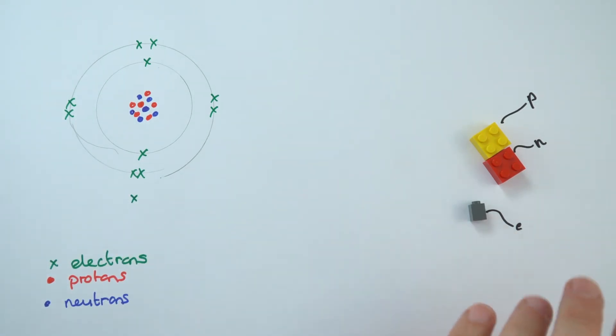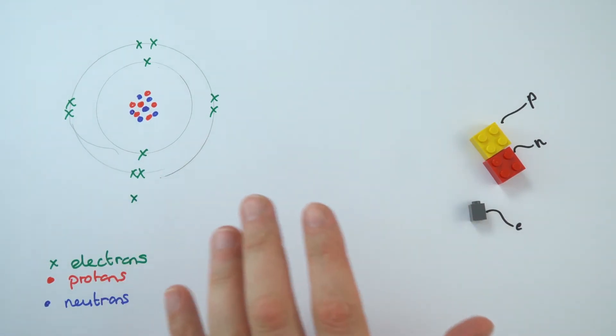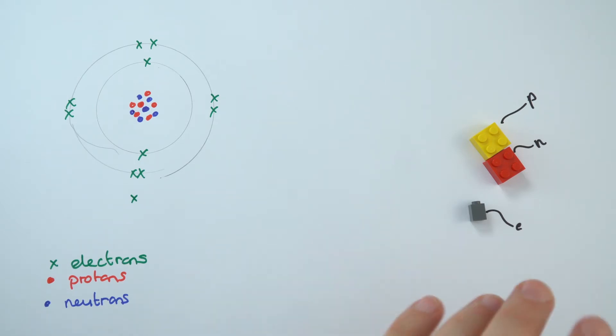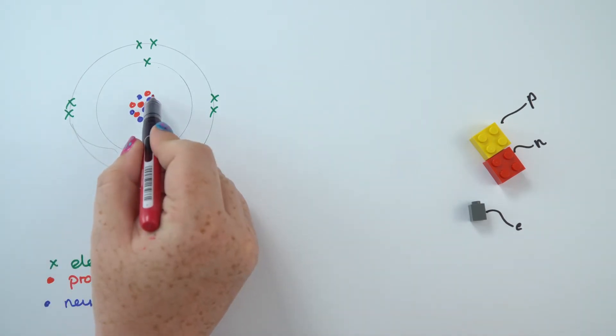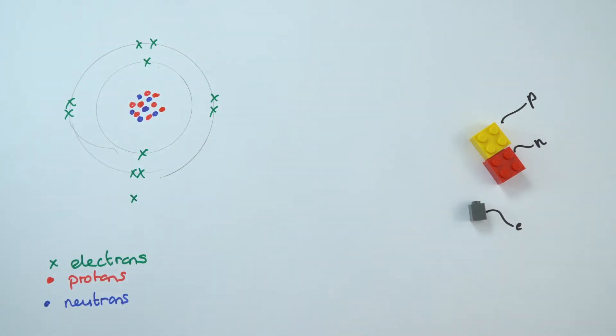So it gets a little bit complicated. Luckily in physics we don't really need to know too much about that. We need to know that there are electrons in distinct shells around the outside of the nucleus. We also need to know that actually sometimes these electrons can jump from one shell to another.